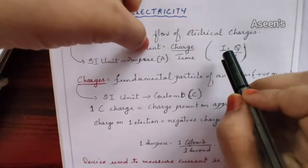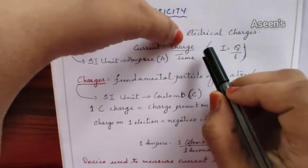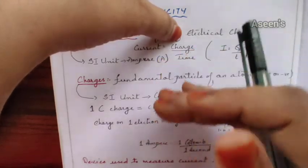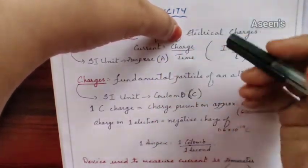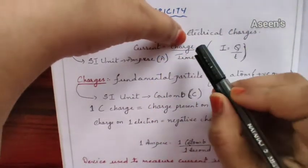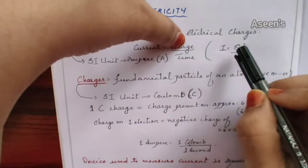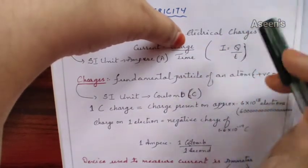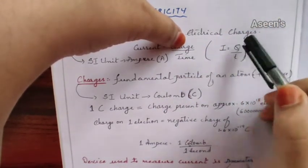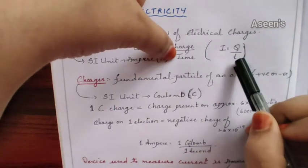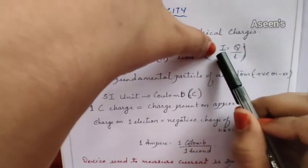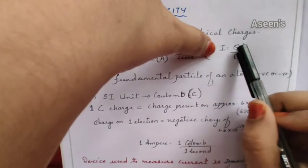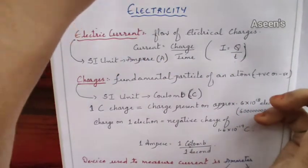I stands for current. Similarly, charge is denoted as Q - its SI unit is different - and time is denoted as T. So current I equals the amount of charge Q divided by time T. You get the value of current easily if you divide the amount of charge by time.